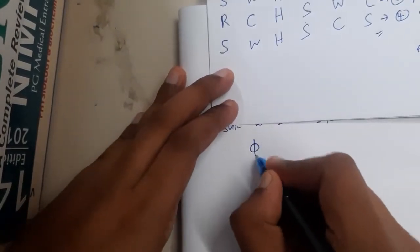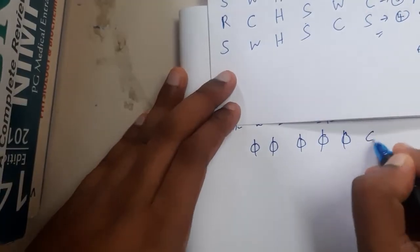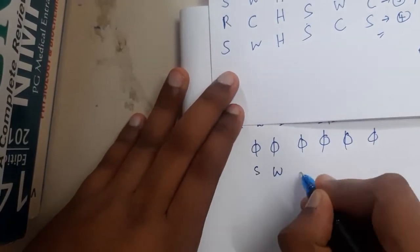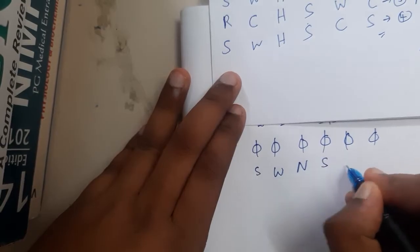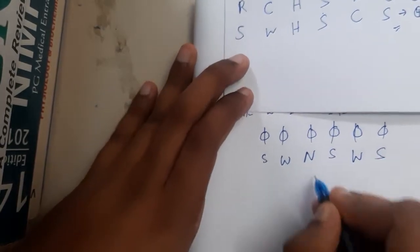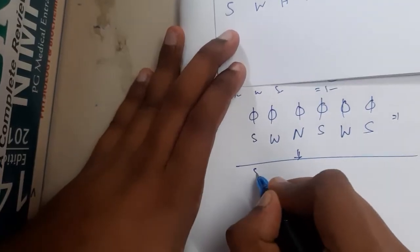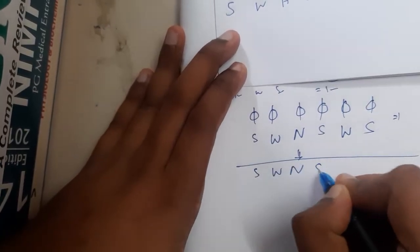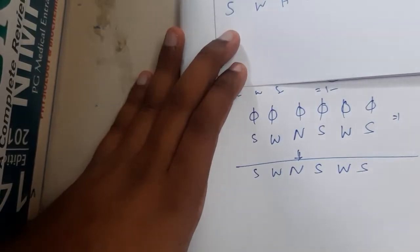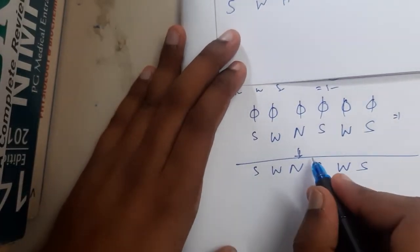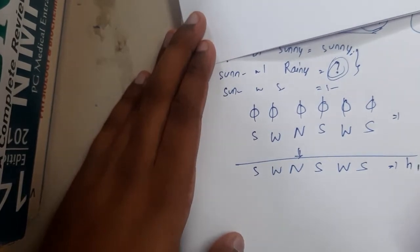Comparing h0 (φ, φ, φ, φ, φ, φ) with row 1 (sunny, warm, normal, strong, warm, same) — since everything in h0 is φ, each φ with the corresponding value gives that value directly. So h1 = (sunny, warm, normal, strong, warm, same).